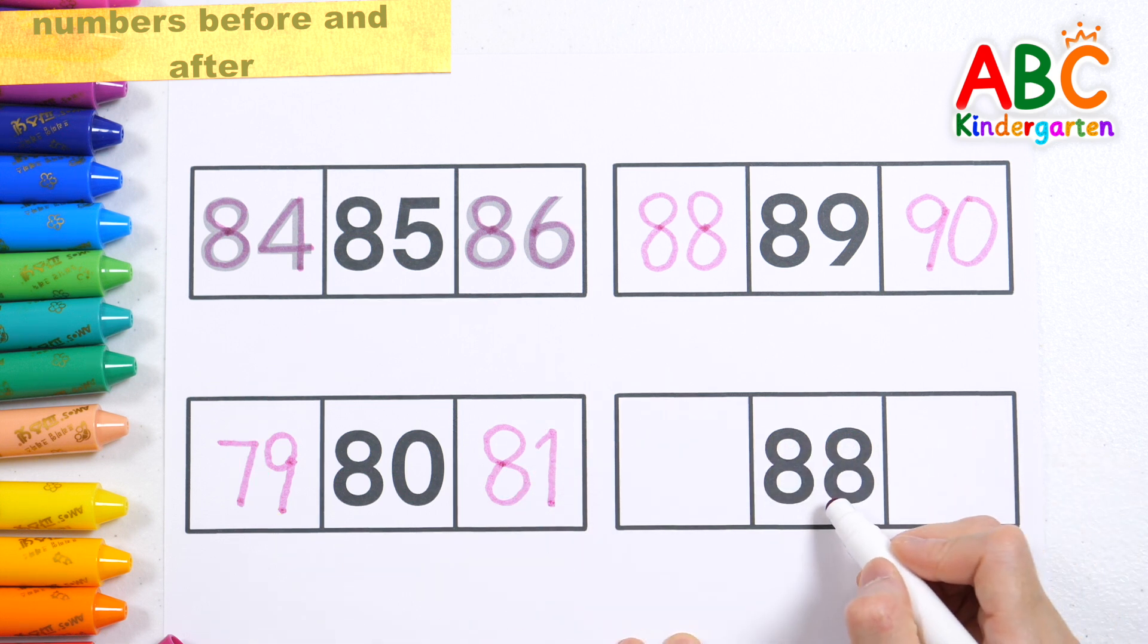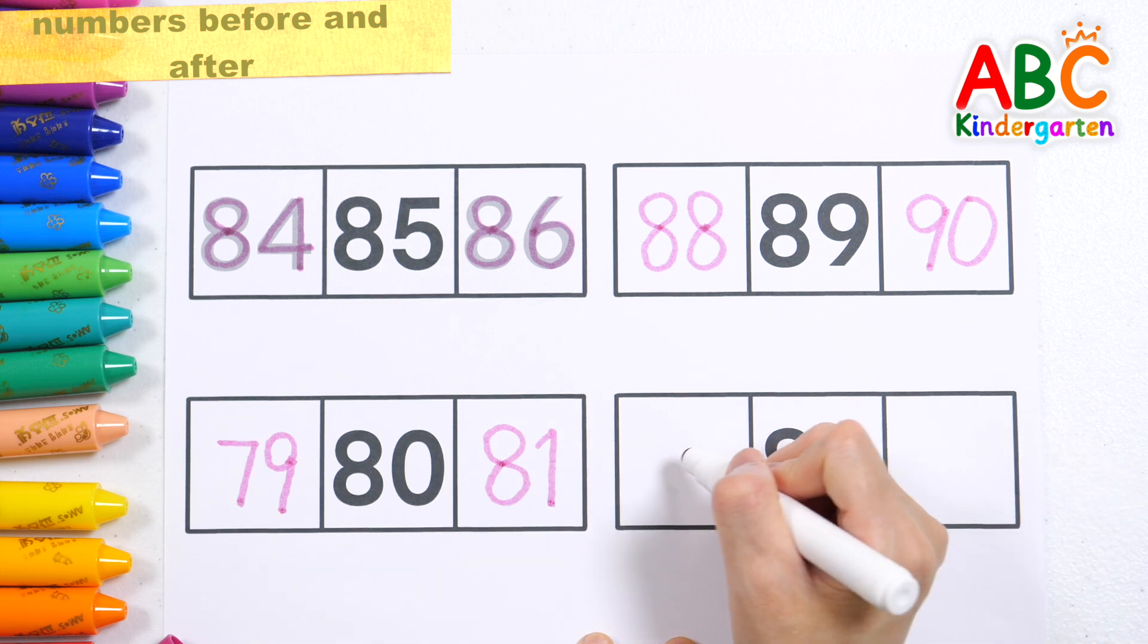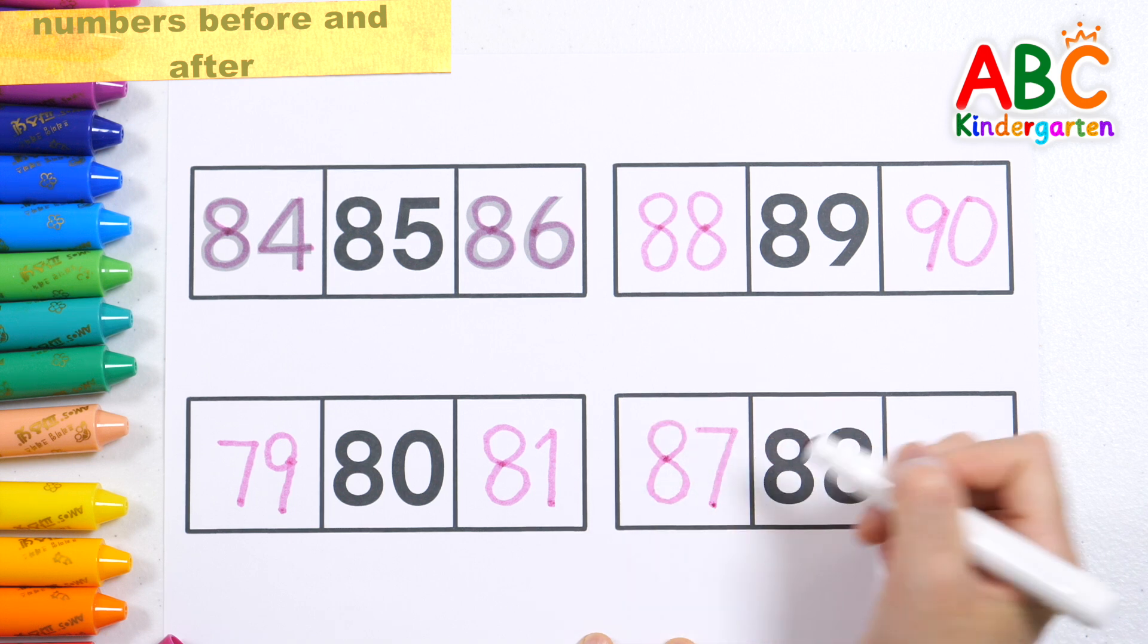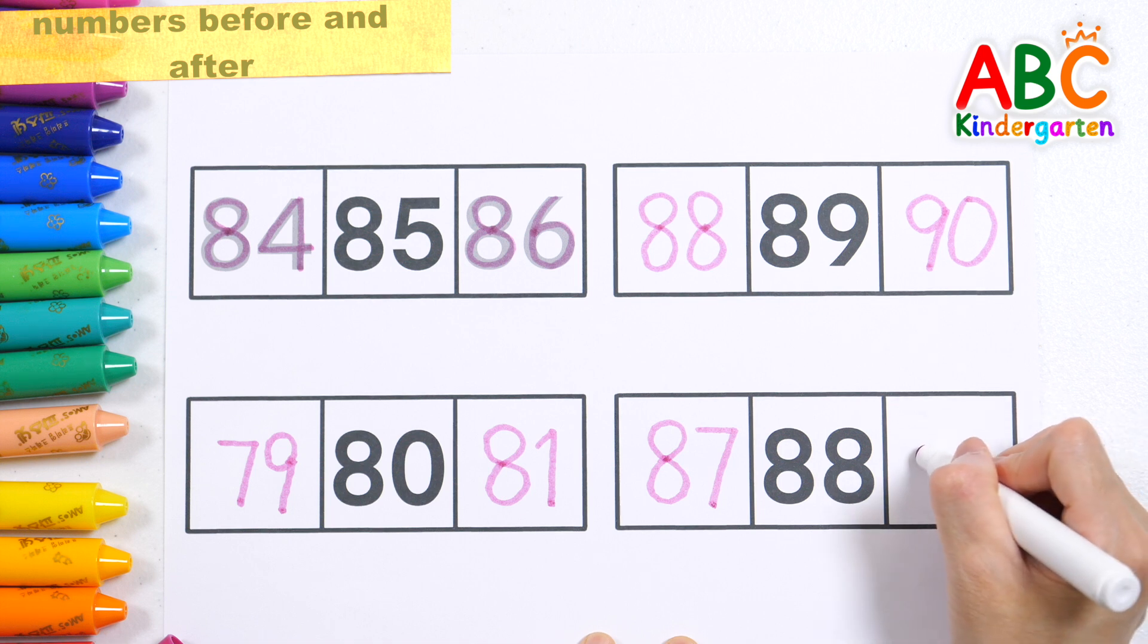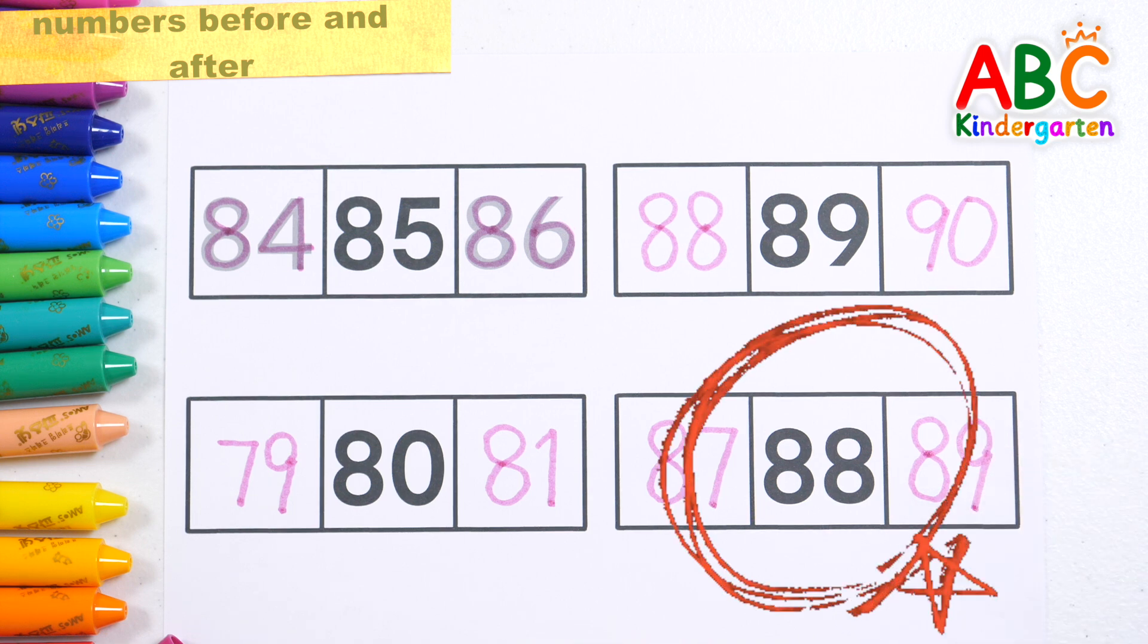The number that is one less than eighty-eight is eighty-seven. And the number that is one greater than eighty-eight is eighty-nine. Very good!